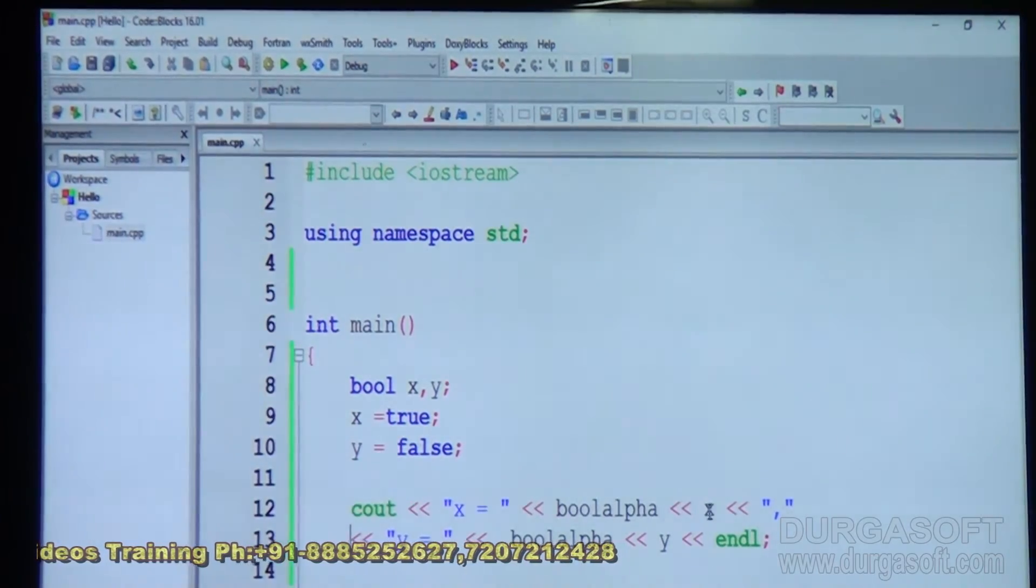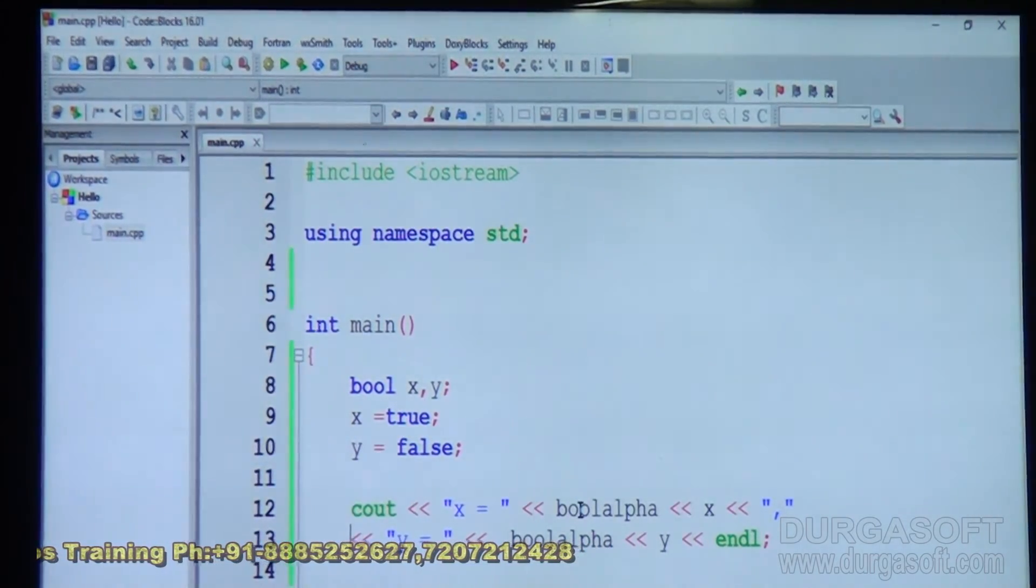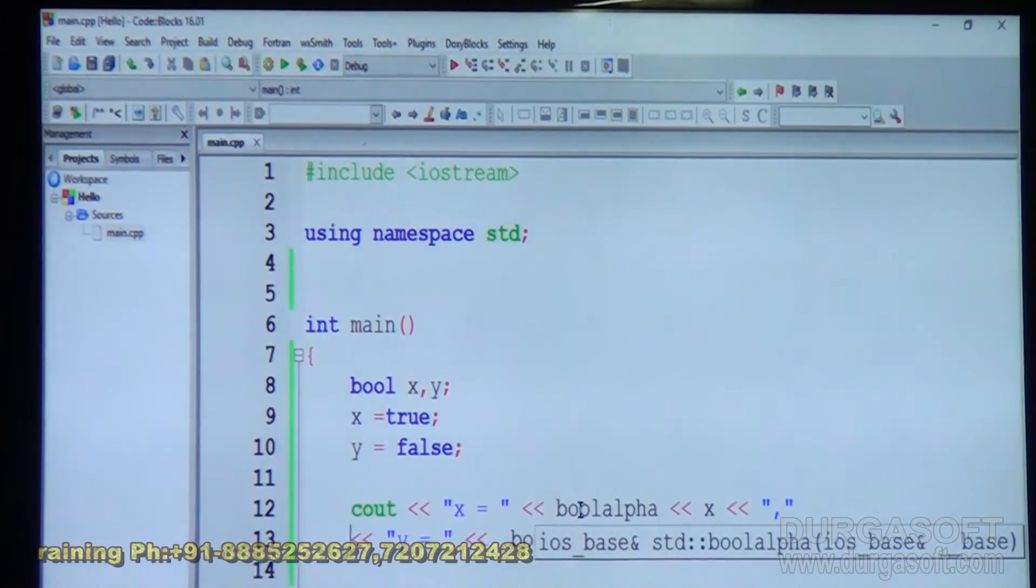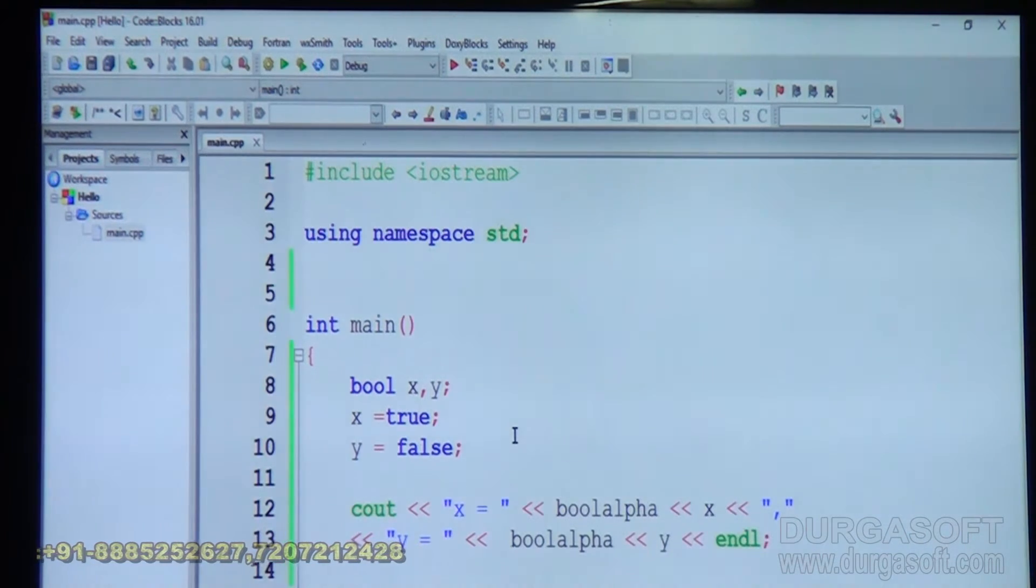Using boole alpha identifier. Like this. Just before x. Use boole alpha. Means it will be. 1 is displayed as true. And 0 is displayed as false. So boolean is new. Type in C plus plus.